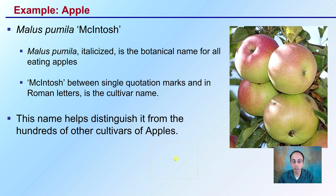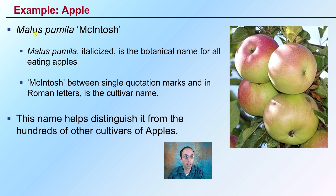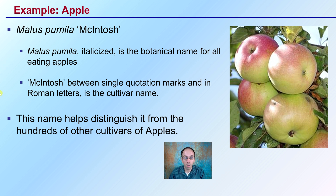Just taking another plant as an example — the Macintosh apple. Proper scientific names should usually be italicized as far as the botanical name for all eating apples. 'Macintosh,' between single quote marks in Roman letters, is the cultivar name. So here we could see Malus pumila, and then we have 'Macintosh.' This name helps distinguish it from the hundreds of other cultivars of apples.